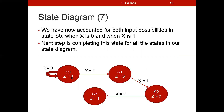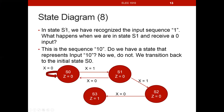Now we'll move to state S1. We've handled x=1 from S1, so what happens when x=0? We're in S1 only after receiving a 1. When we receive a 0, our input sequence so far has been 1,0. We have no state that recognizes 1,0, so we transition back to the initial state S0. We draw the arrow from S1 to S0 with the label x=0.